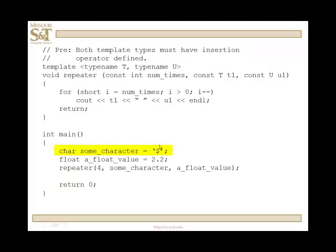So if we run this where we have some character defined to be a character and we initialize it with dollar sign and a float value as 2.2 and call repeater passing it for some character and a float. Then the result is going to be 4 lines of $ and 2.2.